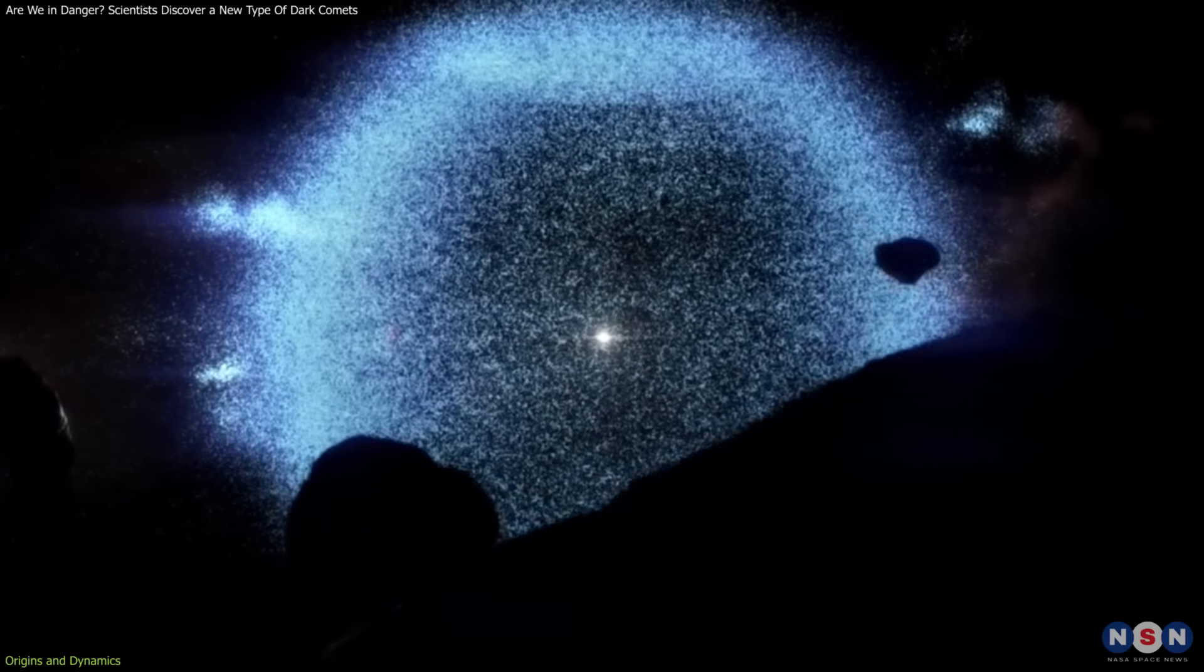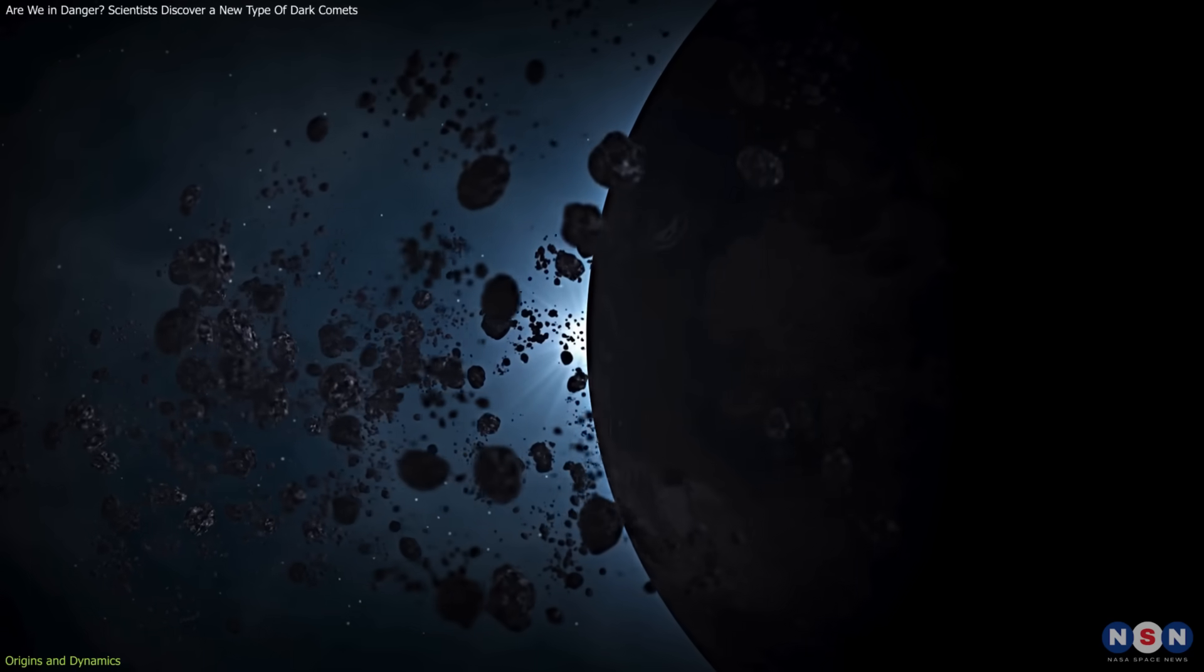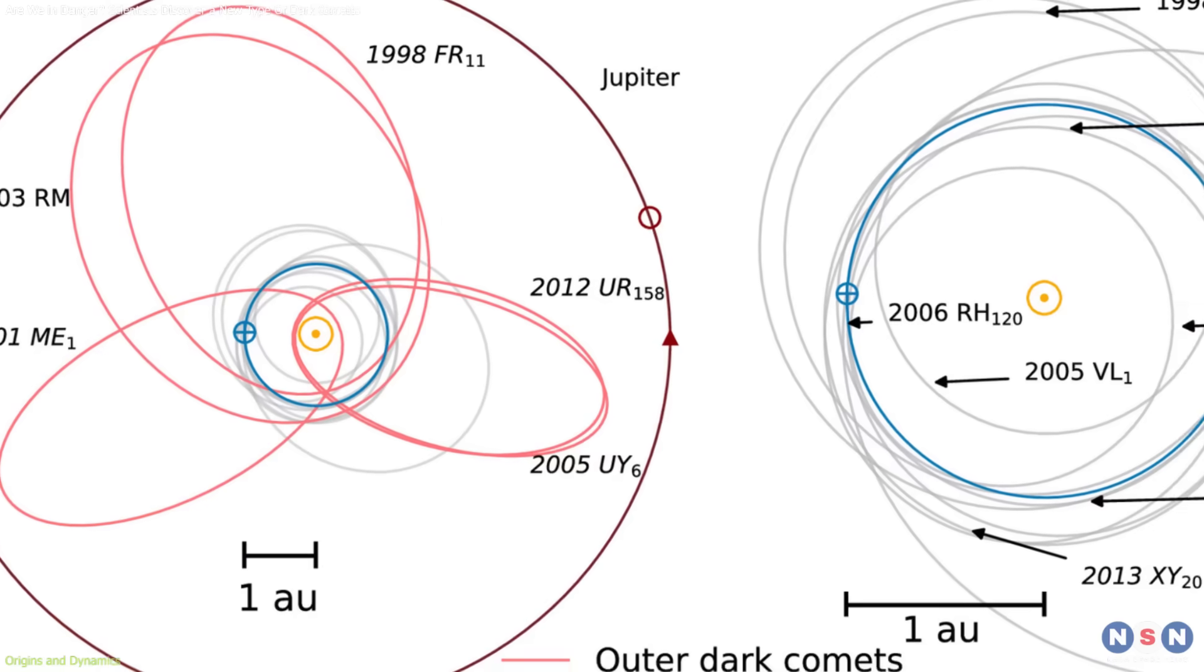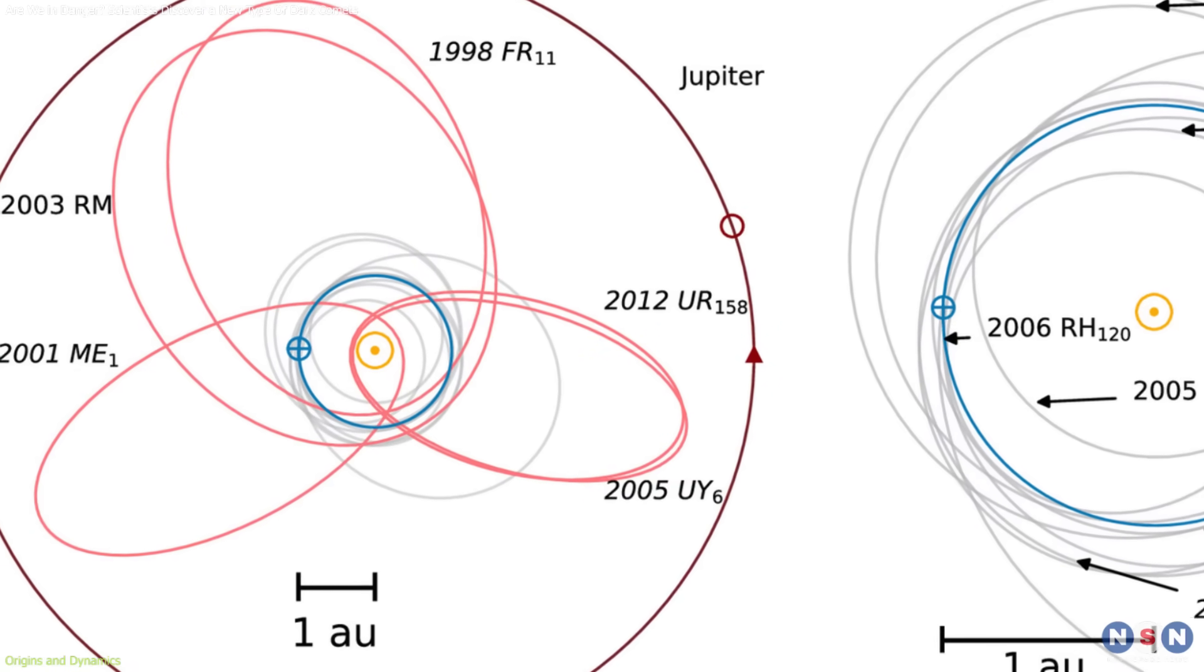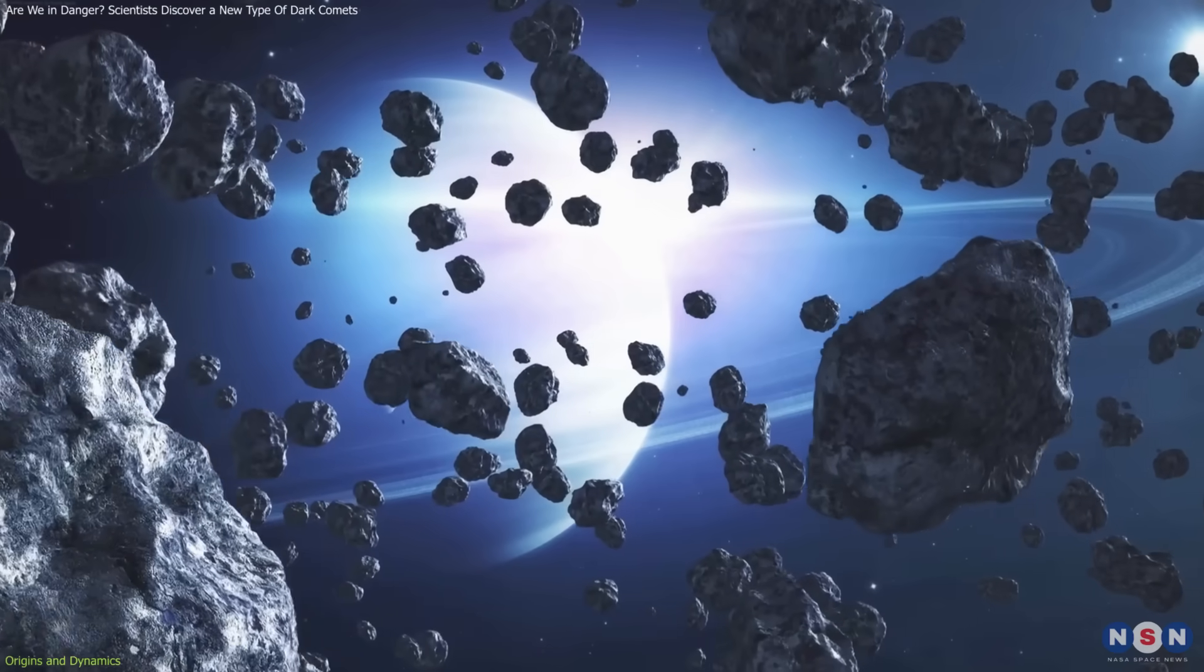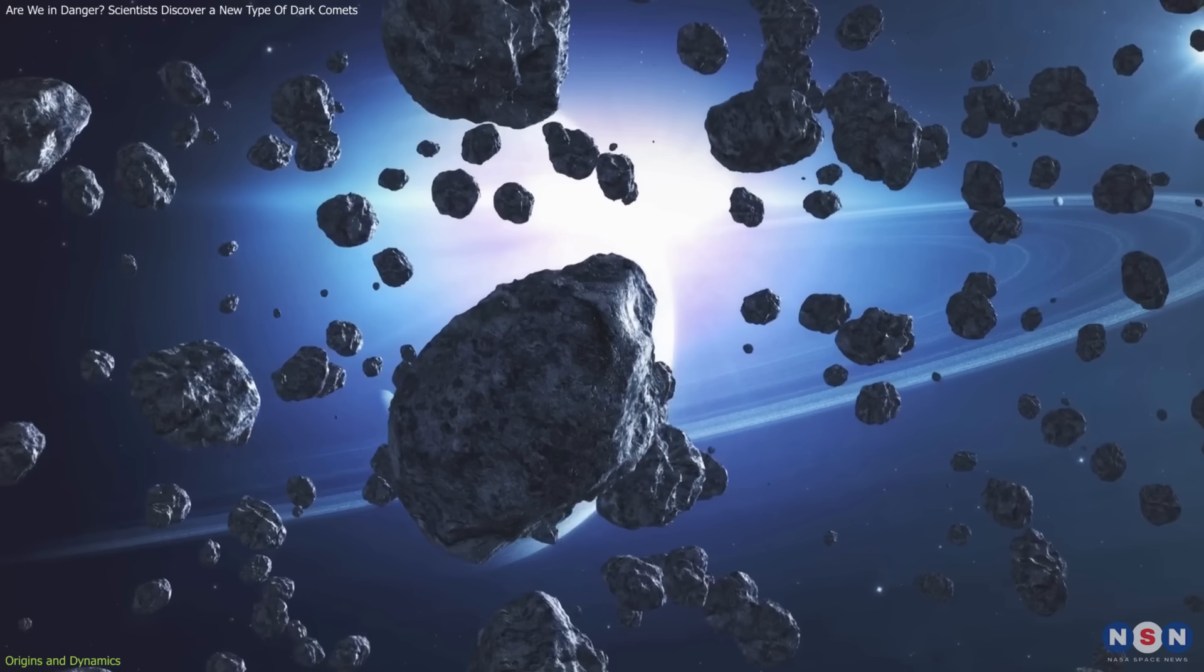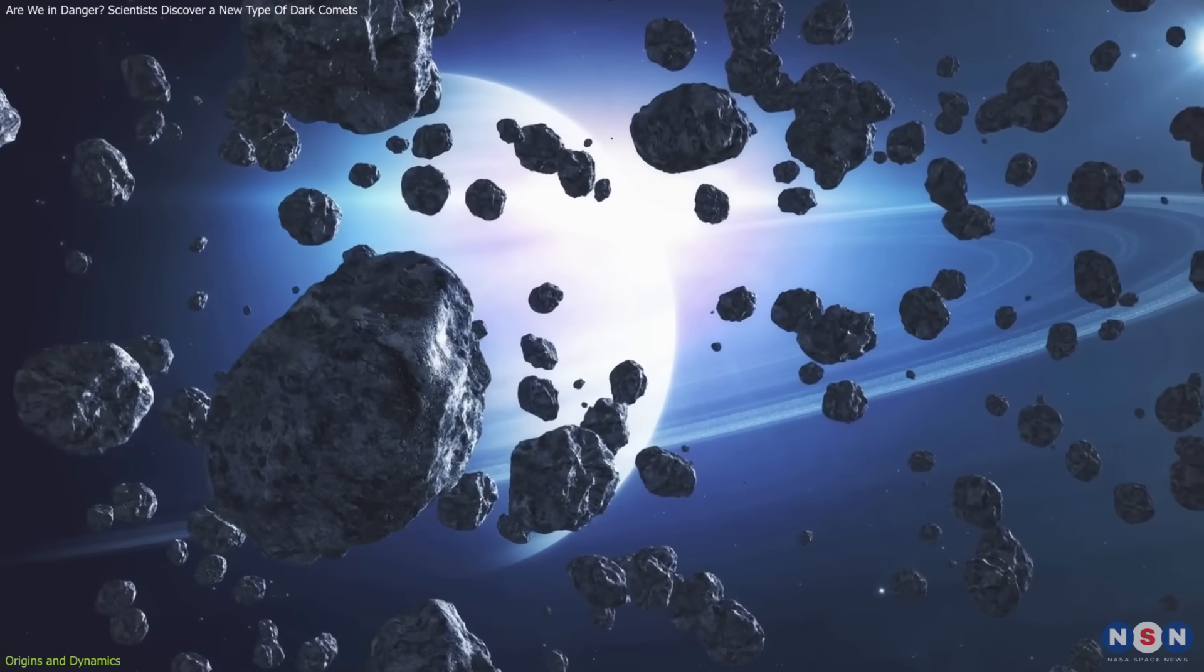These regions are rich in icy bodies, and gravitational interactions with giant planets like Jupiter could have redirected some of them into shorter, more elliptical orbits. Inner dark comets, by contrast, may have evolved from main-belt asteroids that underwent transformations due to collisions or thermal effects.